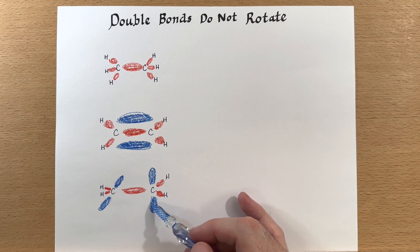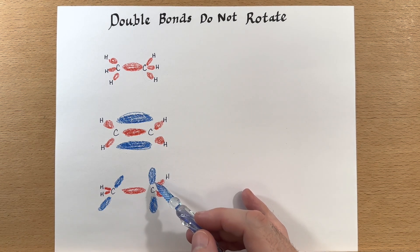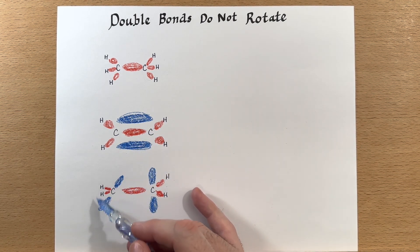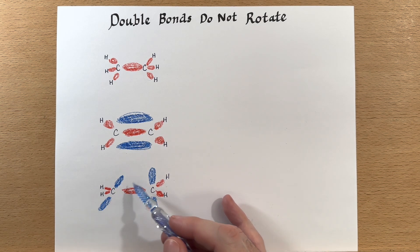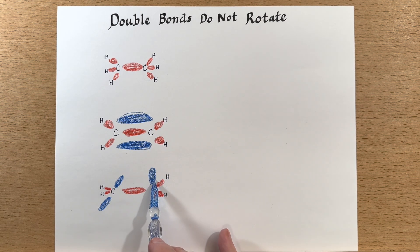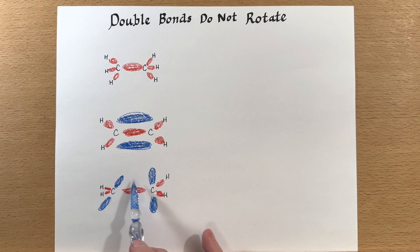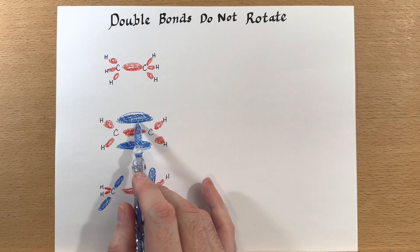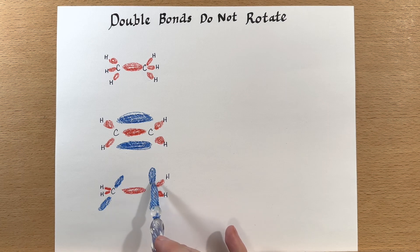And the reason for that is this double bond would break if we tried to rotate it. And I'm trying to illustrate that down here. So we've rotated this hydrogen around and when we do the side-to-side overlap that used to exist up here is now being broken.